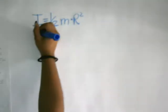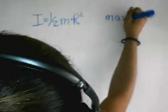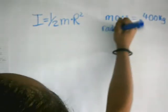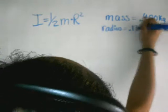So, we know that mass is equal to 0.4 kilograms, and radius is equal to 0.130 meters.